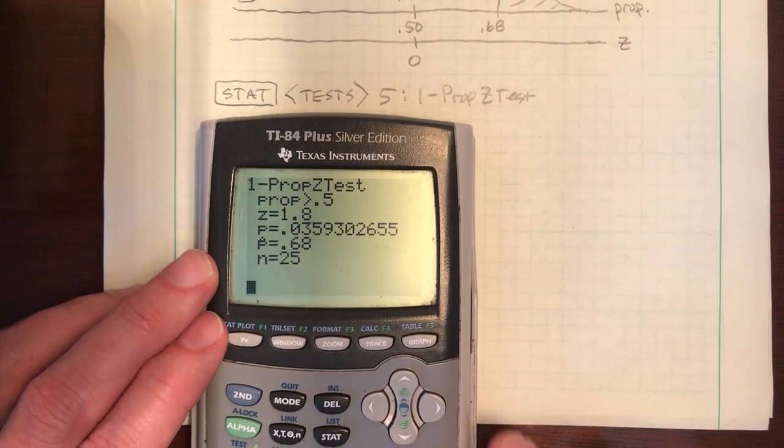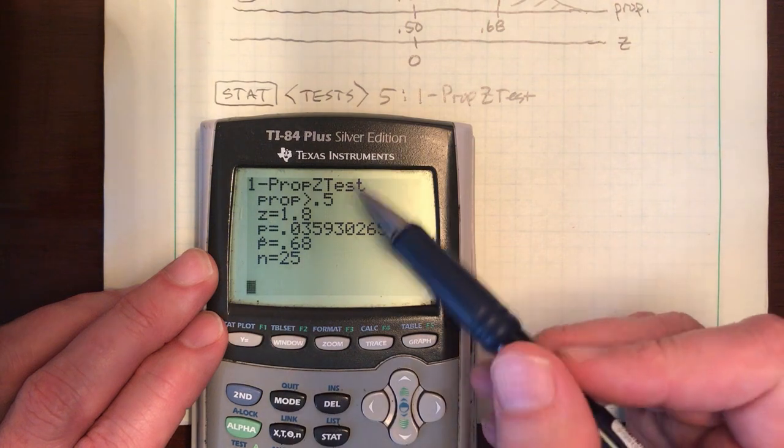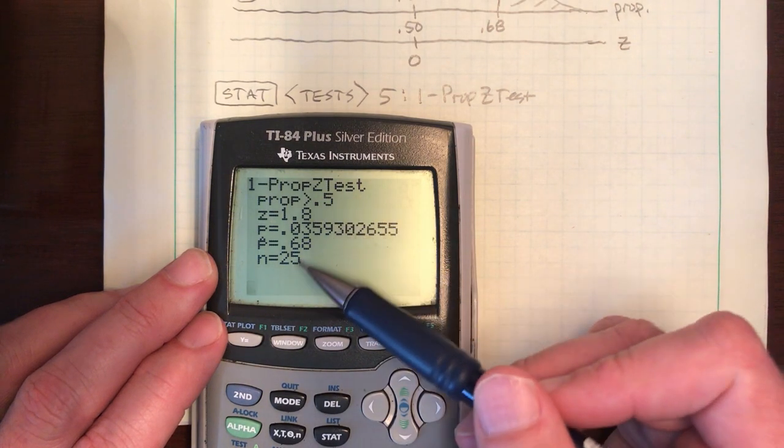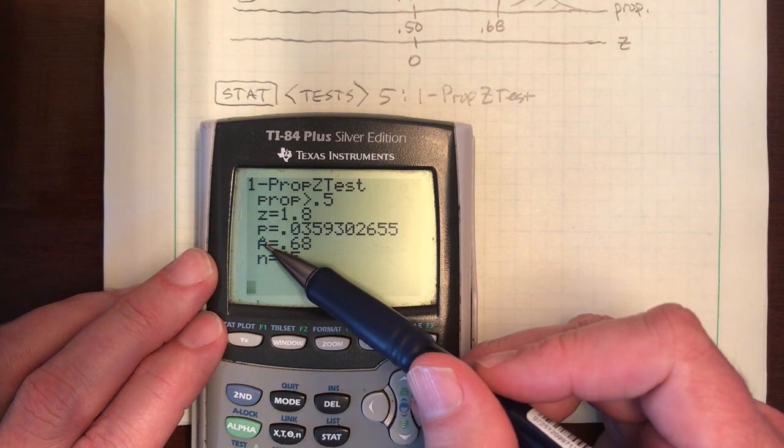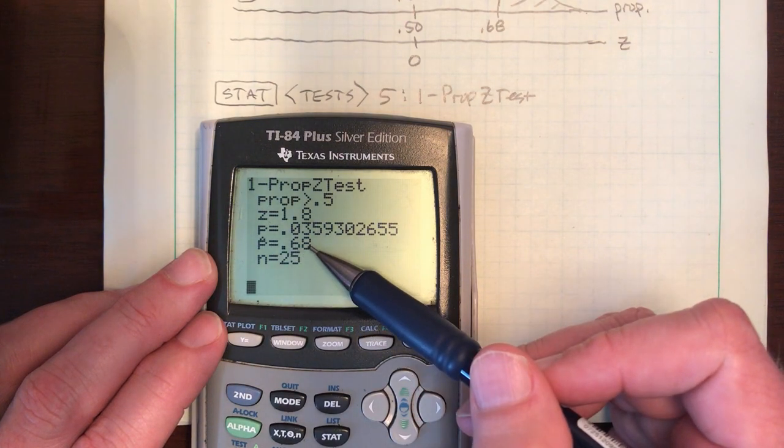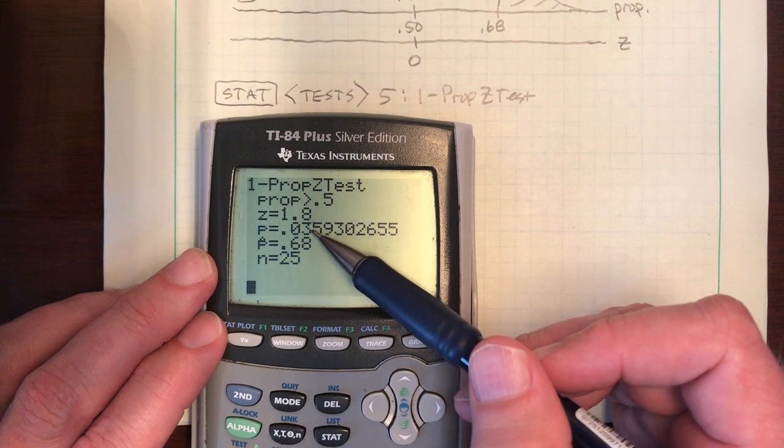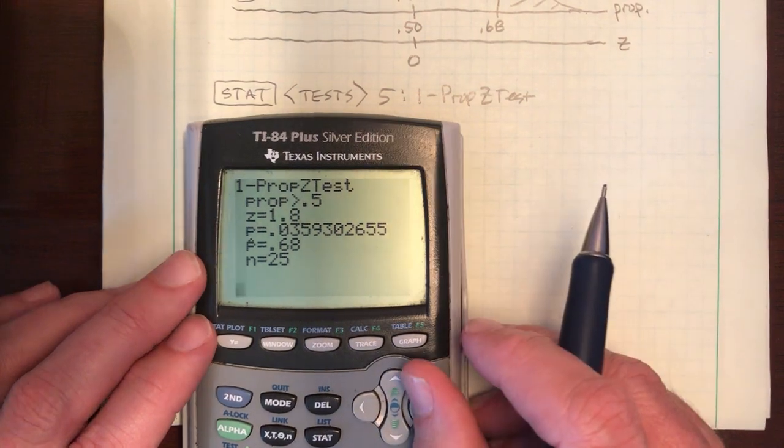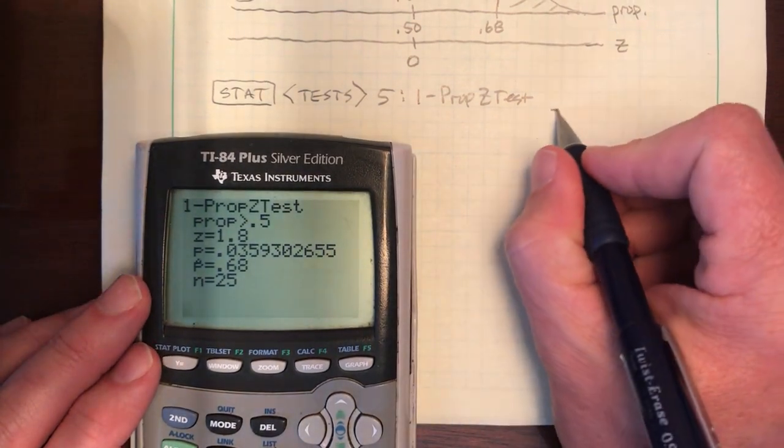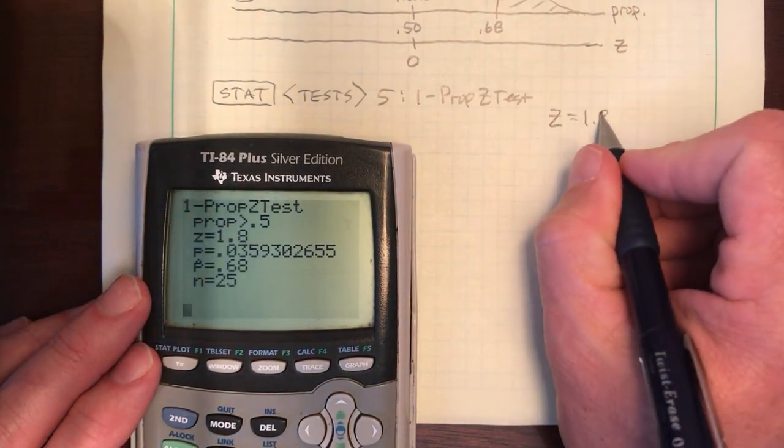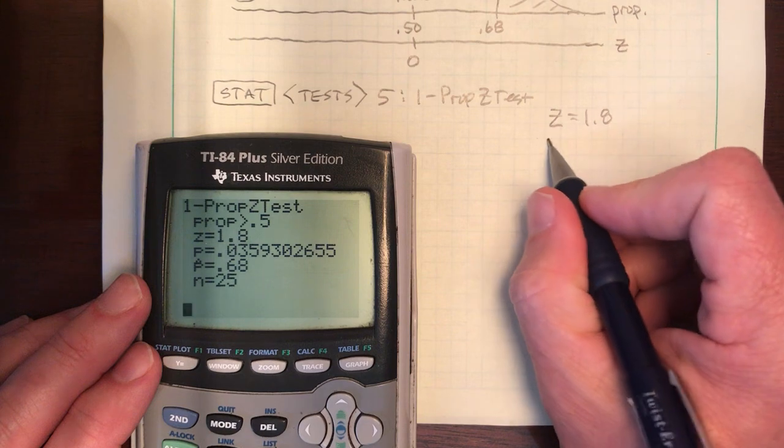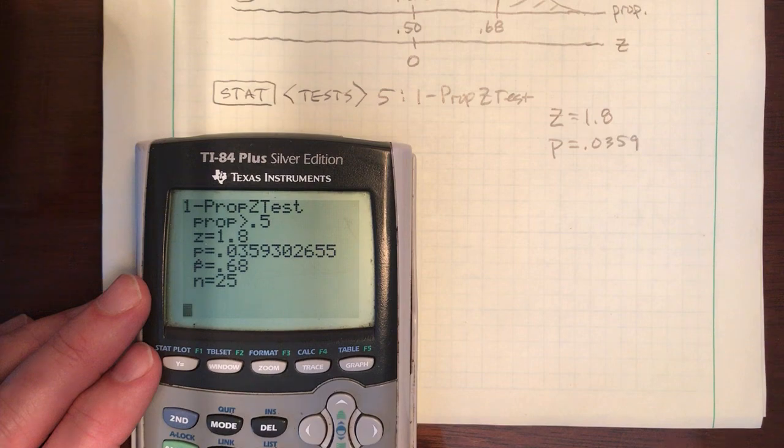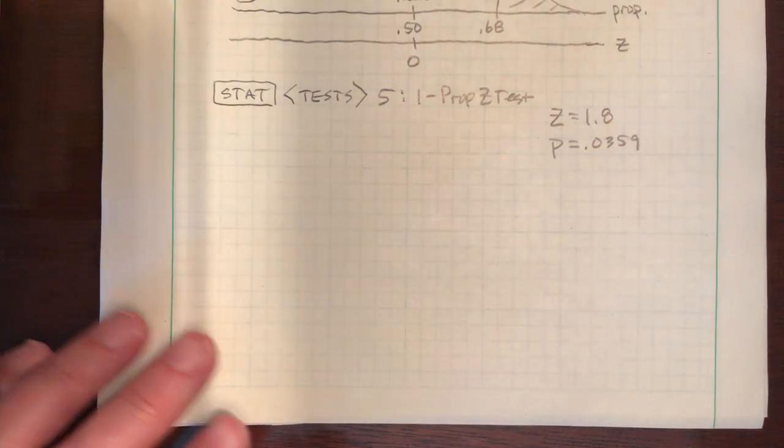And this is the screen we end up with. There's essentially two big numbers on this screen. A few that you'll already recognize. This is my alternative, greater than 50. My sample size, 25. My P hat, my point estimate, 0.68. The two numbers we didn't see before are Z and P. So let me write those down. Z is 1.8 and this P is 0.0359.